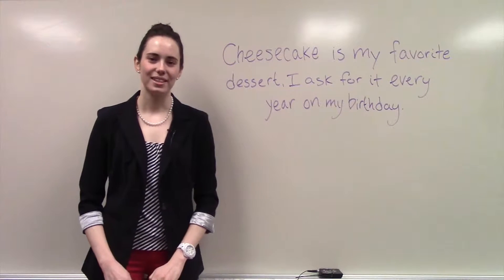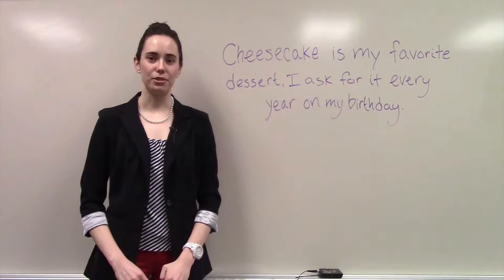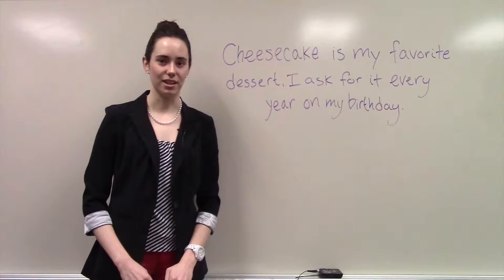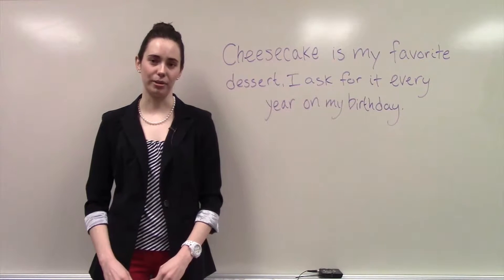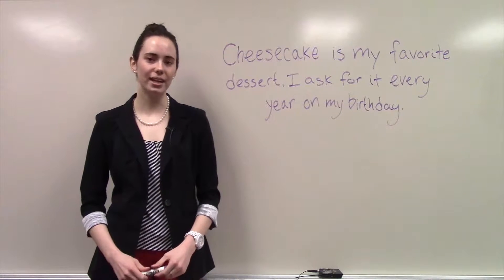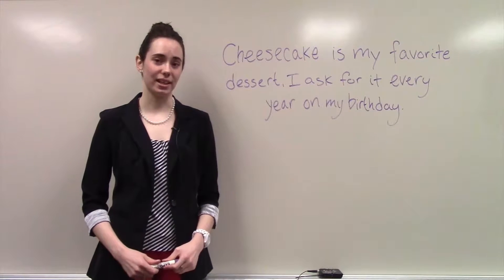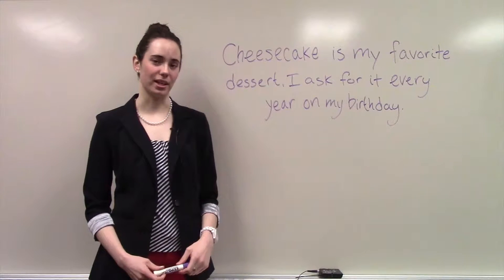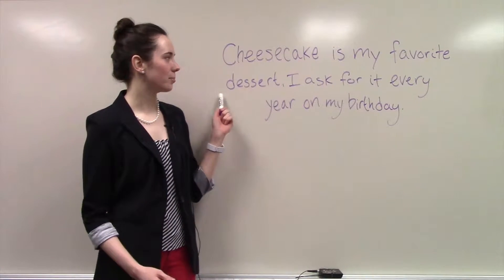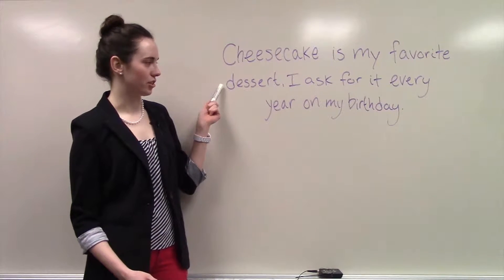A comma splice is a sentence composed of two independent clauses connected by a comma. An independent clause is something that contains both a subject and a predicate. For example, cheesecake is my favorite dessert.